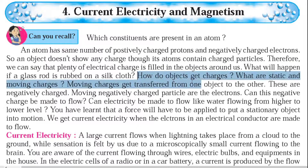How does an object get charged? Due to rubbing, the positive and negative charges get separated. Positive and negative charges are separated.